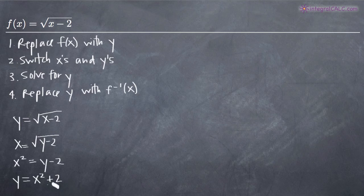So finally, now that we have it in this form, y = x² + 2, the last thing we have to do is replace y with f⁻¹(x), which is the notation for the inverse of the original function f(x).